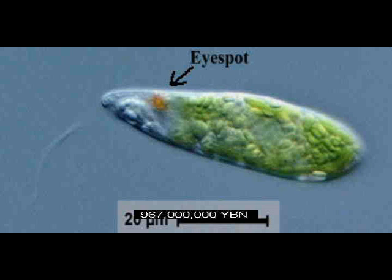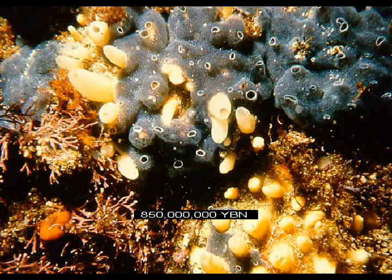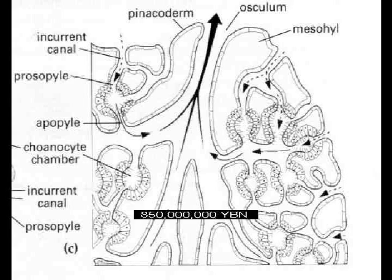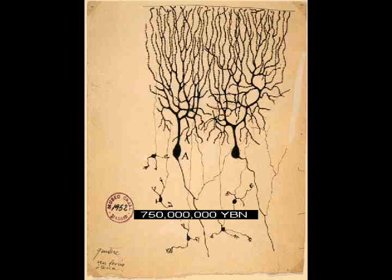First fungi. Eukaryote I. First three-dimensional response to light. Multicellularity evolves in a free-moving protist, allowing larger free-moving organisms to evolve. First animal and first metazoan: sponges. Male gonad. Animal cells group as tissues. First nerve cell, neuron, and nervous system.